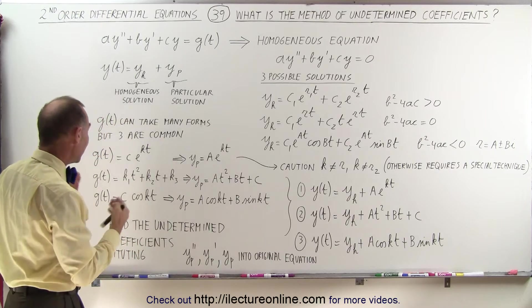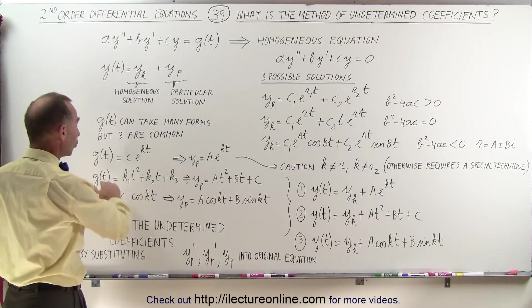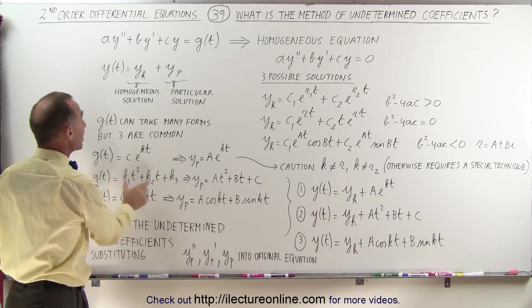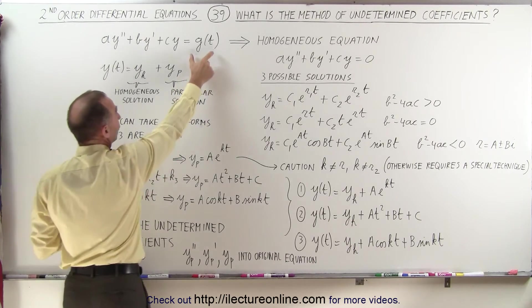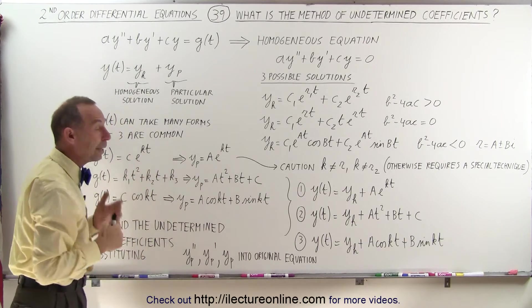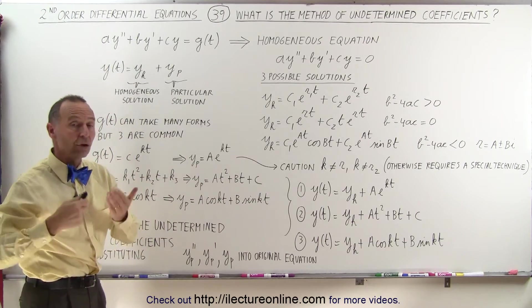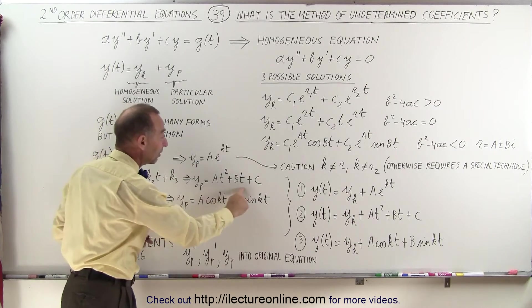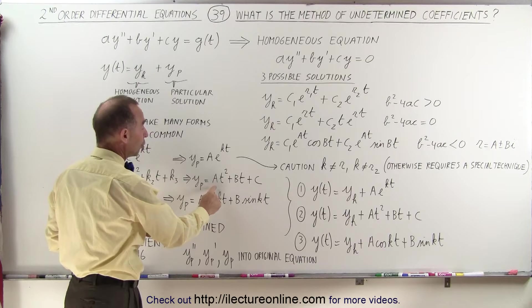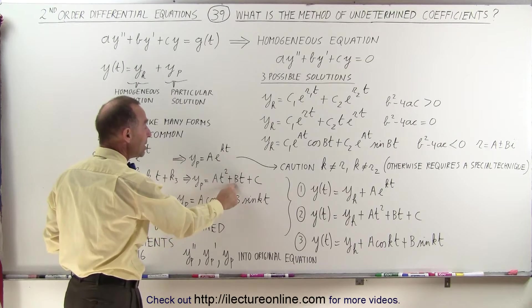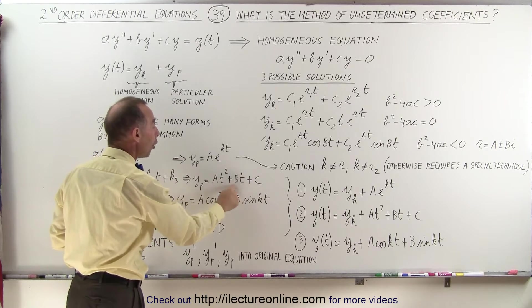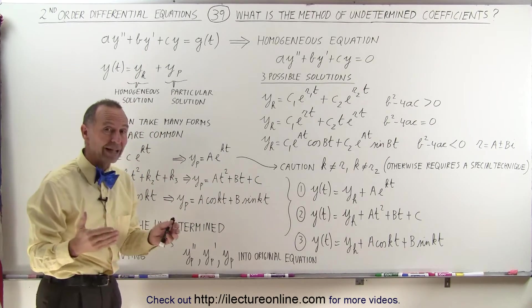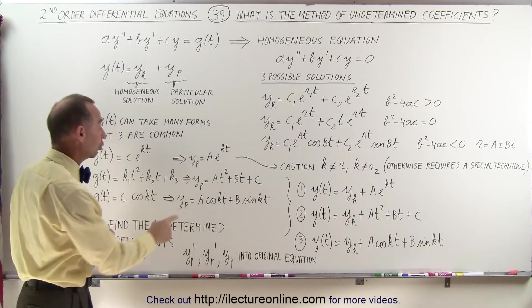If g of t is a polynomial function, then we know the solution will look something like a polynomial, and we need to determine a, b, and c — all three of these coefficients — to find the particular solution.